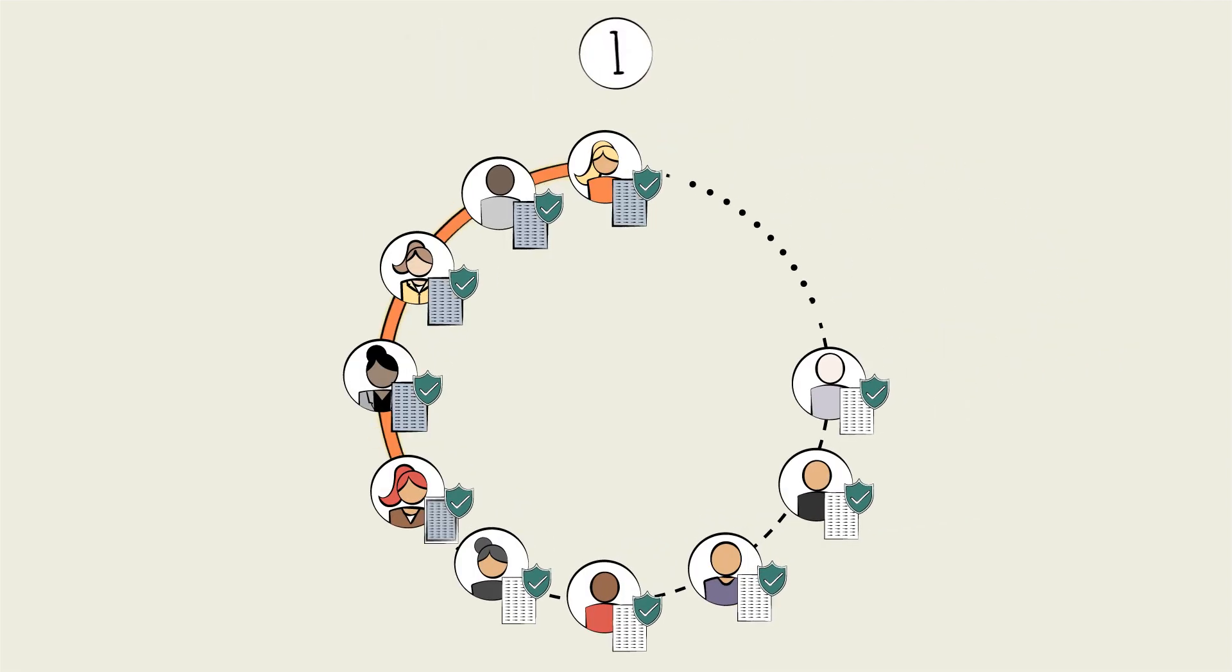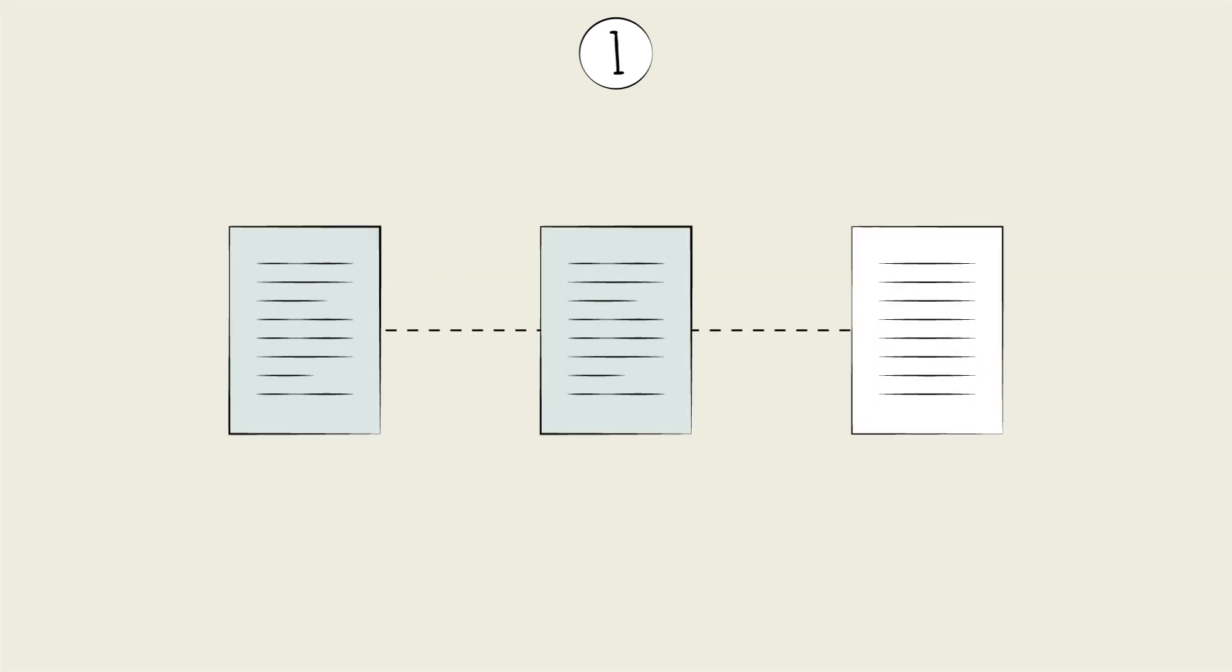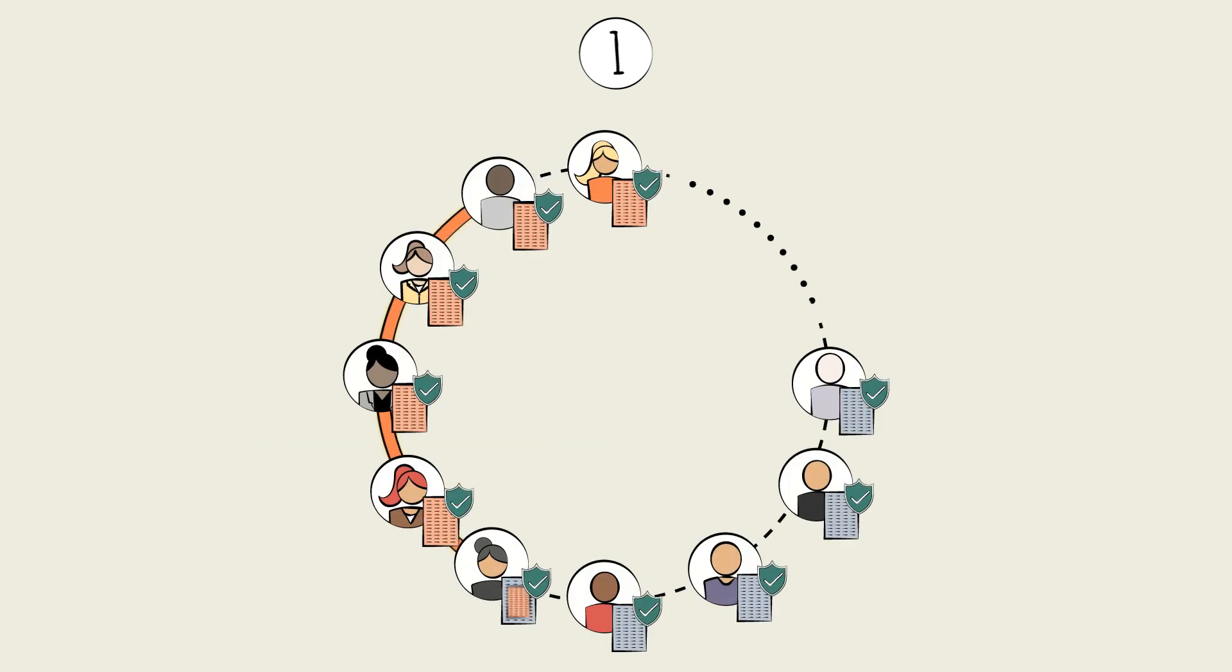For one, each copy would need a built-in way to signal when the data changes. That way, instead of constantly cross-referencing all the data in all of the copies, the townspeople can simply look for the signals. No signal, no changes.